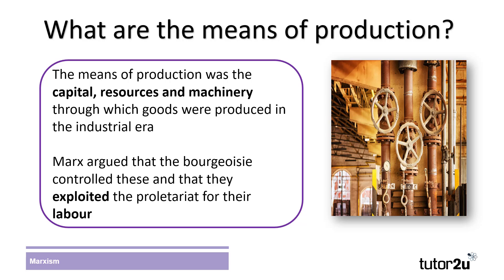The means of production were essential to the economy as they were used to produce the goods that people consumed. While the bourgeoisie controlled these factories, machinery and resources, they needed the proletariat to work for them in order to supply the manpower to produce goods. Whilst this should have been a mutually beneficial agreement with the bourgeoisie paying the proletariat for their labor, Marx argued that the proletariat were exploited by the bourgeoisie by being paid low wages, particularly in comparison to the profits that the bourgeoisie would make from selling the goods made with the labor of the workers.